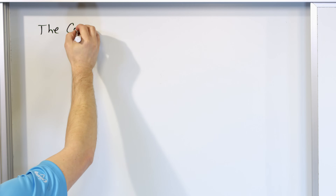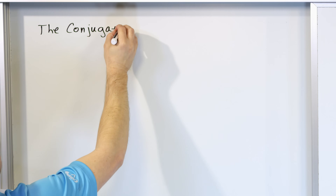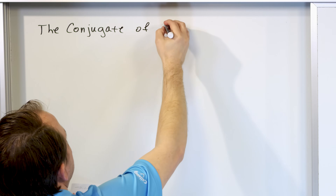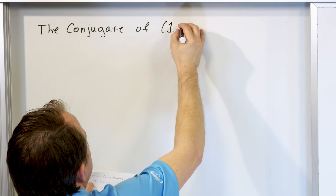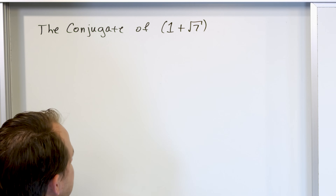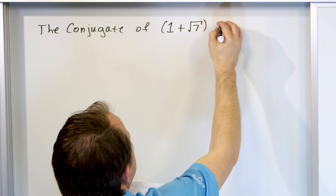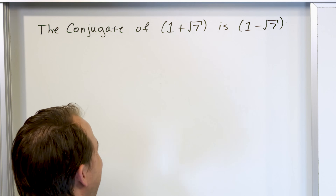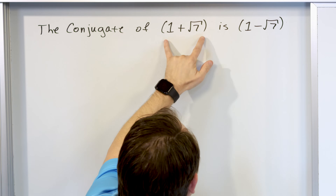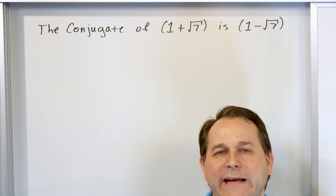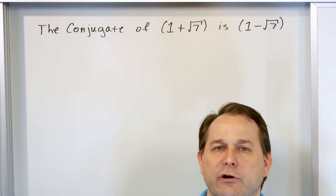So the conjugate — forget about complex numbers for a moment — the conjugate of the expression one plus the square root of seven. We've used this kind of thing before. The conjugate of this is one minus the square root of seven, and we used this because when we had radical expressions with a term like this in the denominator of a fraction, we basically don't want any radicals in the denominator.